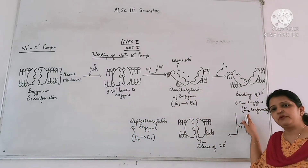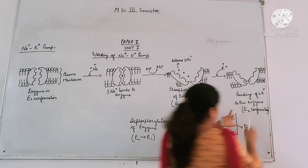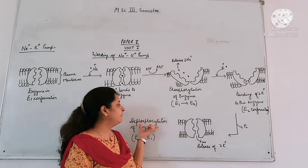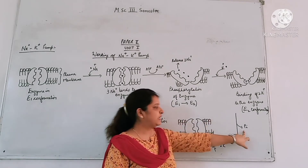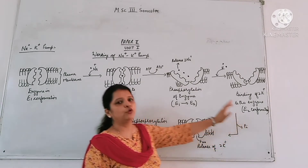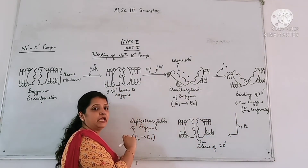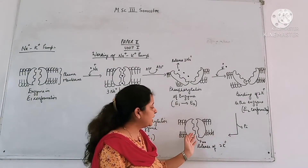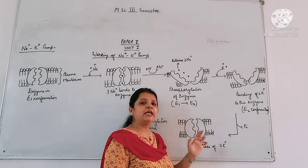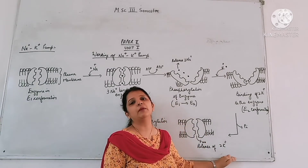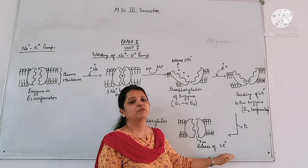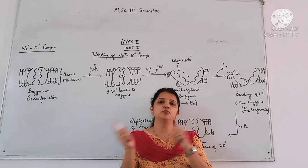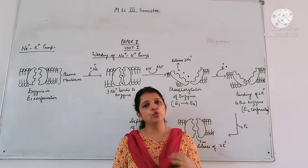When the 2 K+ ions bind, the inorganic phosphate undergoes hydrolysis causing dephosphorylation, and the conformation reverts from E2 back to E1. In E1, the enzyme releases the 2 K+ ions inside the cell. This is how, across the cell membrane, 3 Na+ and 2 K+ ions are transported across the membrane — and this is what is called the sodium potassium pump.